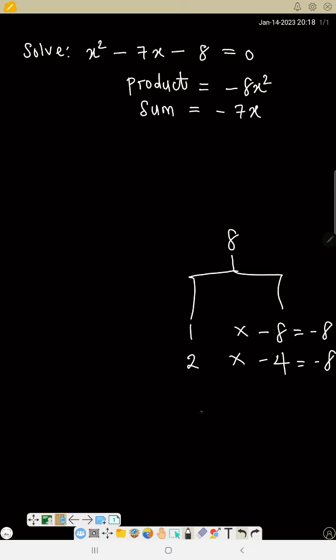Now add the two together. So the first one, 1 minus 8 will give you minus 7. Second one, 2 minus 4 will give you minus 2. So I'm using this one because our sum is minus 7.